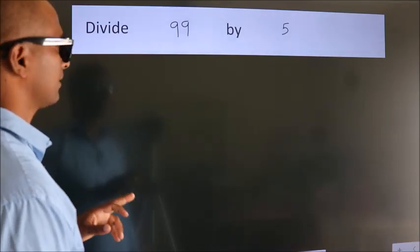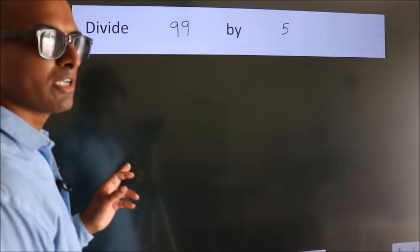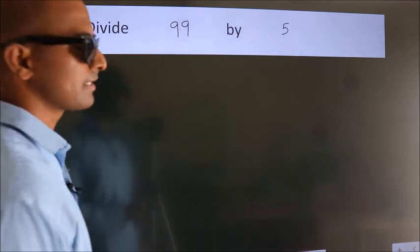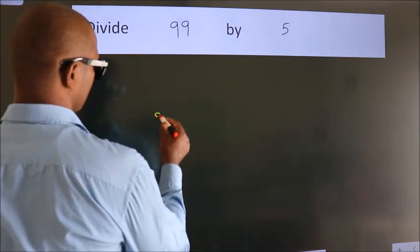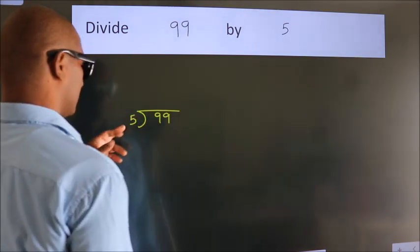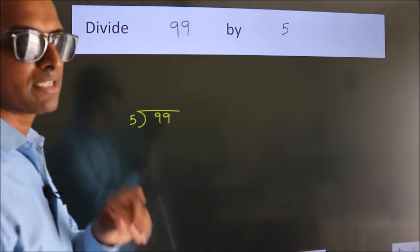Divide 99 by 5. To do this division, we should frame it in this way. 99 here, 5 here. This is your step 1.